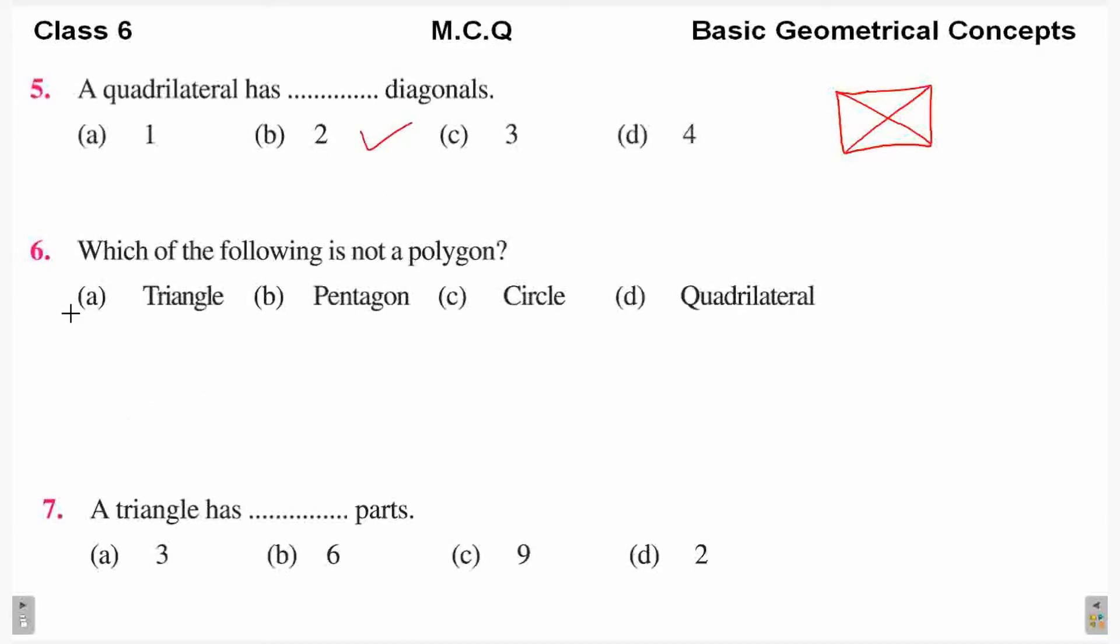Next, which of the following is not a polygon? Now, what is a polygon? Polygon is a simple closed curve or simple closed figure made up entirely of line segments. Line segments should be 3 or more. So triangle is a closed figure made up of 3 line segments. This is also a polygon.